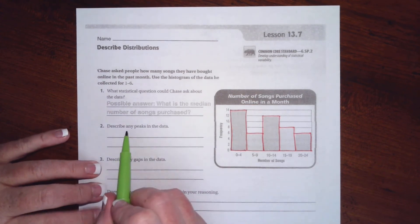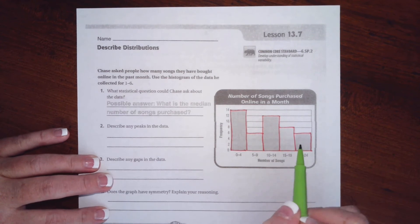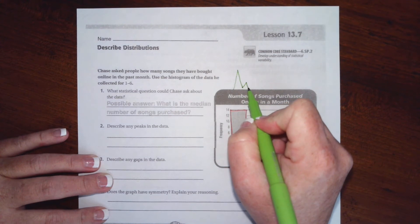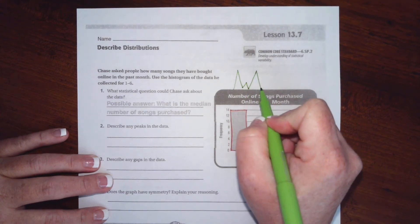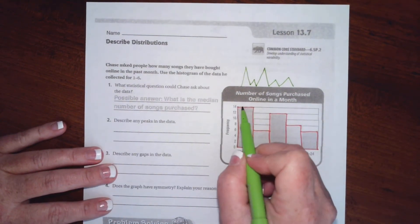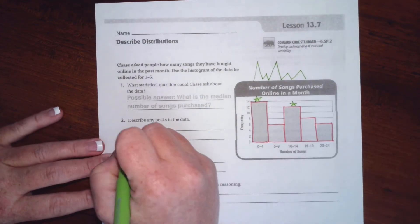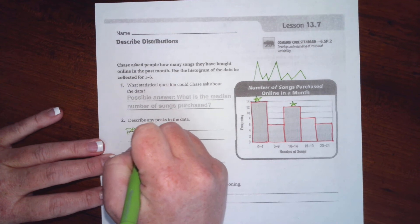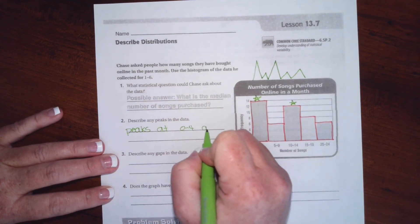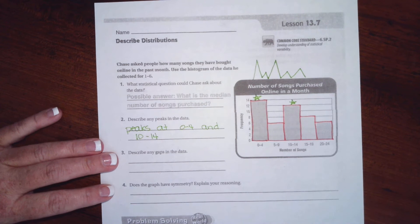It says describe any peaks in the data. So this is the data we're looking at for peaks, and I tend to think of them like mountain peaks. Looking at it like mountain peaks, you can see that there's one right here and there's one right here. So peaks at 0 to 4 and 10 to 14.